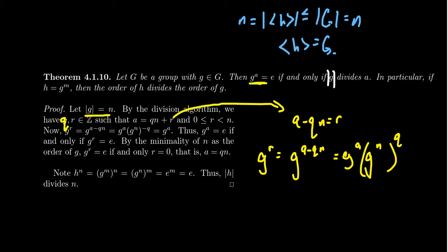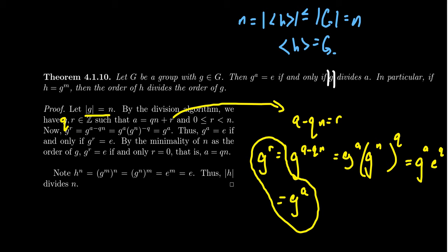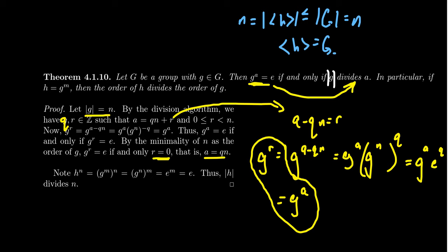If we take this quotient equation and manipulate it, a minus Q·N equals R. Notice that G to the R equals G to the a minus Q·N, which equals G to the a times G to the N raised to the Q. Since N is the order of G, G to the N is the identity, so we get G to the a times the identity to the Q, which is just G to the a. So G to the R equals G to the a. If we assume G to the a equals the identity, that implies G to the R equals the identity. But R is less than N, so the minimality of N forces R to be zero. Therefore, if G to the a equals the identity, then N divides a, which means the order of G divides a.